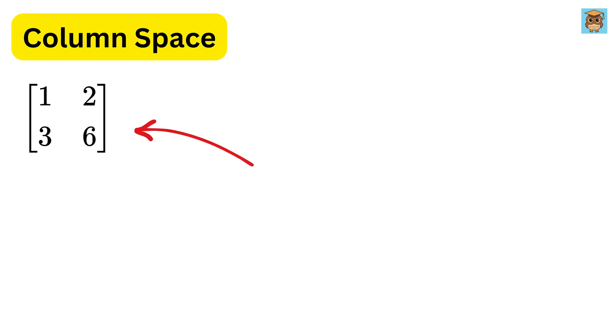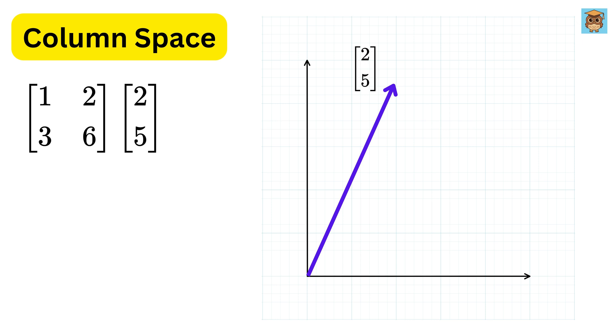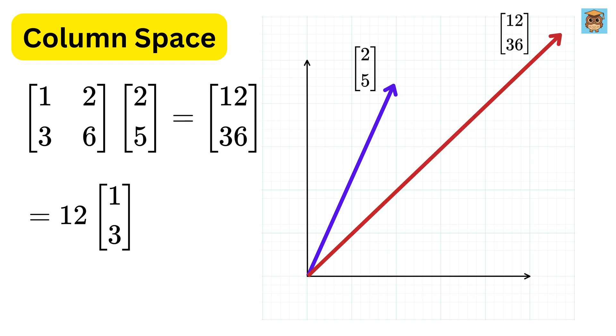Now let us take any random input vector, say 2,5, which will lie somewhere here. When you multiply this vector with this matrix, you get the result as 12,36, which we can also rewrite as 12 times 1,3, and it will lie somewhere here.